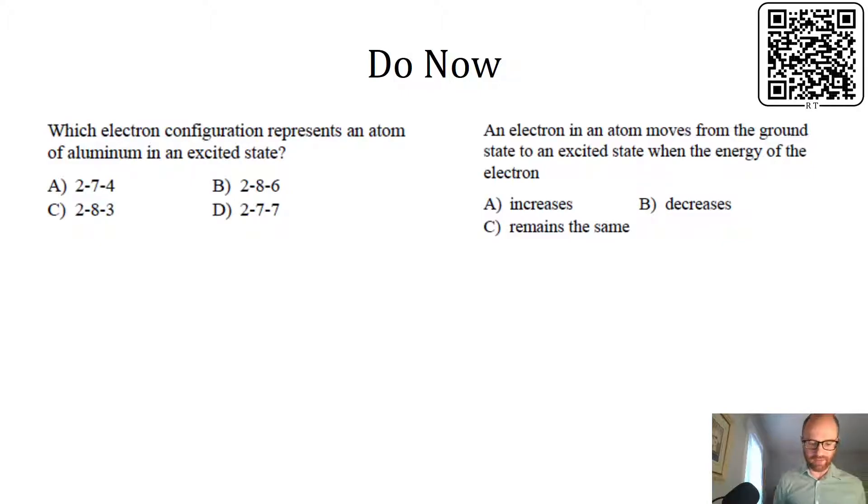To write an excited configuration for aluminum, we should first look up the ground state configuration, which is 2-8-3. So what we're looking for is something that has 13 electrons and isn't 2-8-3. That rules out C as a potential answer and also B and D because that's the wrong total number of electrons, leaving us with A. For the second problem, as an electron moves from ground state to excited state, the electron increases in energy. That's how that transition happens.